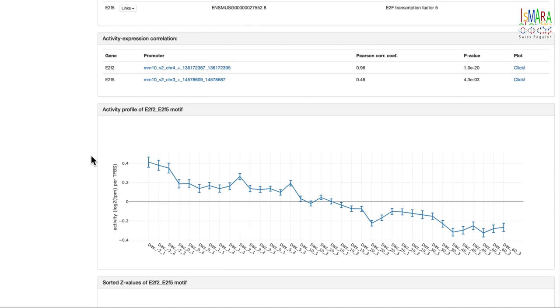This plot shows the inferred motif activity across the samples, including error bars. Formally, the motif activity in a sample corresponds to the expected log-fold change in expression that would result from removing a single binding site from this promoter. This profile says that E2F2_E2F5 motif is up-regulating its targets most in the pre-birth stage, and that its targets are progressively down-regulated with time.